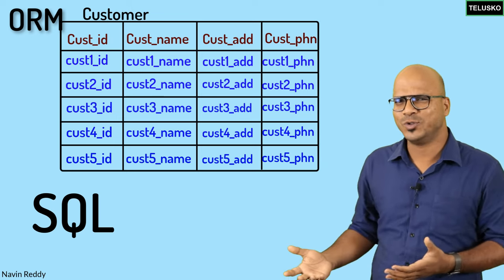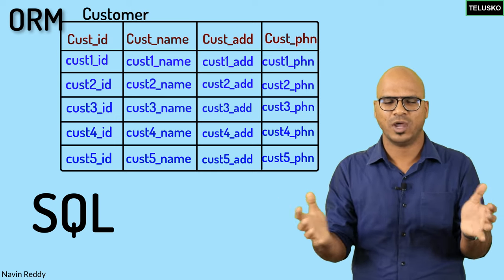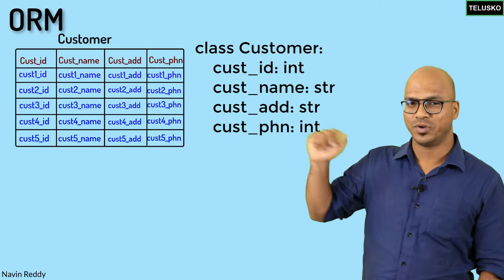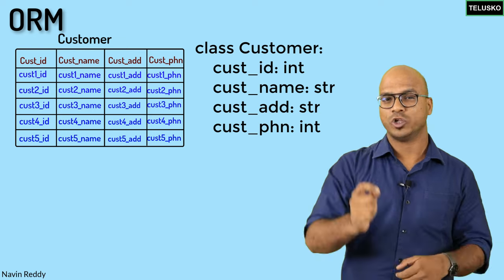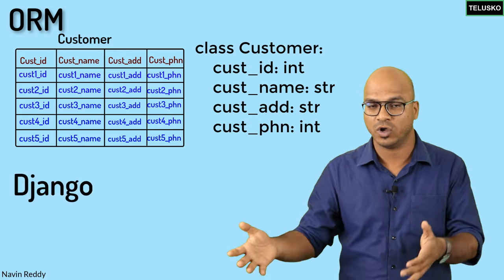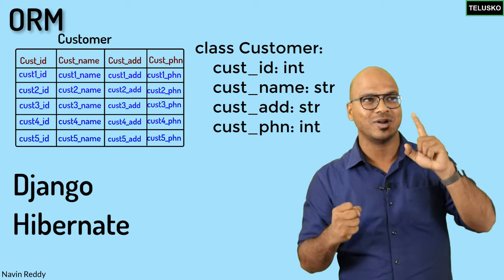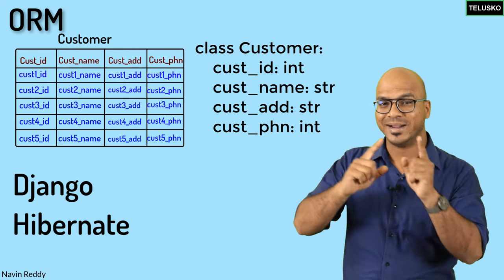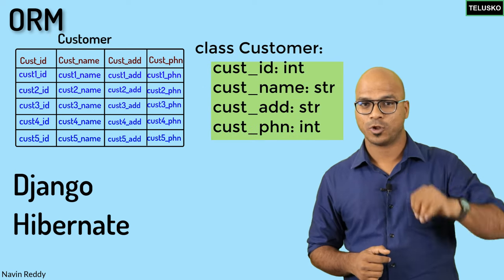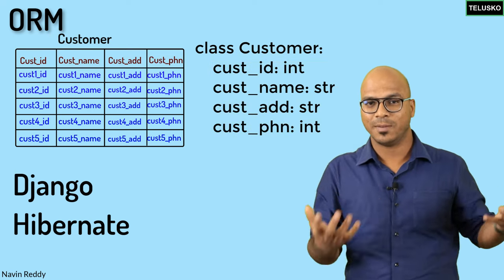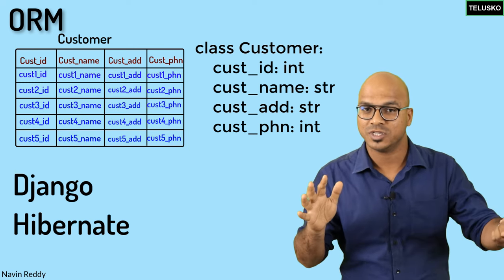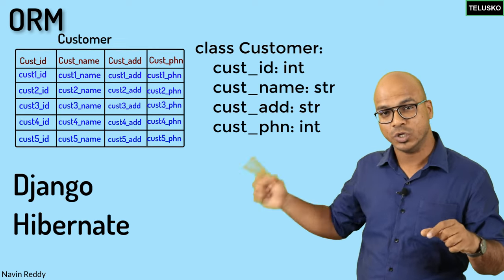Now if you don't want to write SQL — if you say, I want to focus more on my application and not on SQL queries — you can simply say: I have a class here, I don't want to manually create a table, that table should be created automatically. Is it possible? The answer is yes. The framework you are working with — maybe Django, or Hibernate in Java — has the power to look at your classes and say: okay, this is a Customer class, I will create a table called customer with four columns matching the four properties. And depending on how many objects you create and save, it will create the corresponding rows in the database automatically.